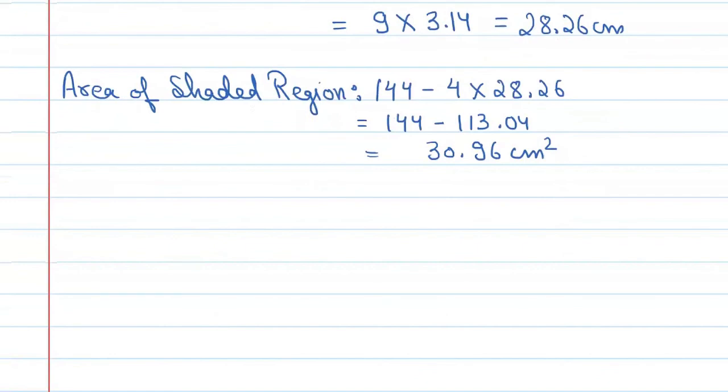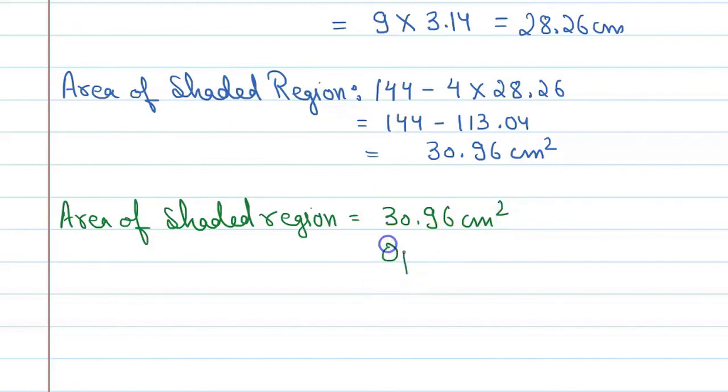So let's write our final answer. From there we can say area of shaded region is equal to 30.96 centimeter square, and the correct option is A.